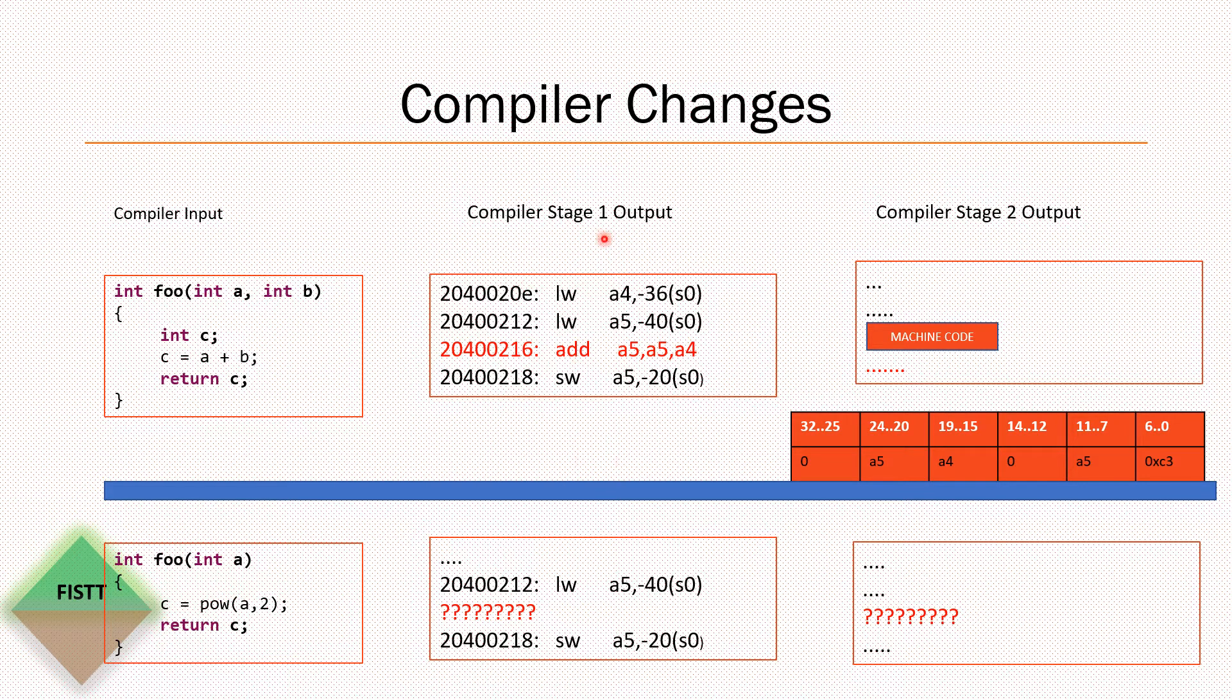This power function would be converted with the help of existing assembly instructions and still it will work. But if we want this to be replaced with our own int16sq module, then we need changes in the first stage of compiler and in the second stage of compiler as well because this has to generate the corresponding machine code of int16sq.